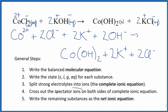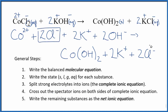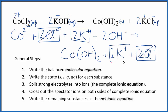Now we'll cross the spectator ions out. We have two chloride ions in the reactants and two in the products — these are spectator ions, we can cross them out. Two potassium ions appear again in the products — spectator ions; they haven't changed, so we're not interested in them. What's left is the net ionic equation for COCl₂ plus KOH.